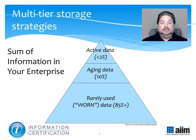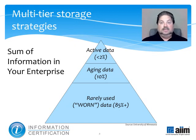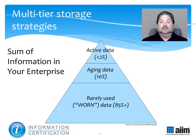For example, an active database application might keep current transactions in a file system on top-tier storage and move 30-day-old transactions to another file system on a second-tier device. As production storage devices grow dangerously close to full, large inactive files might be relocated to larger, slower, and less expensive devices.